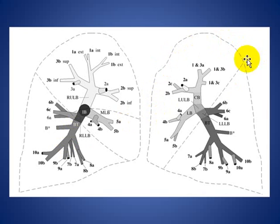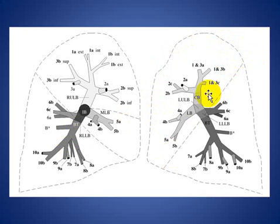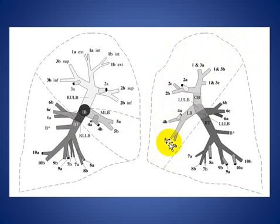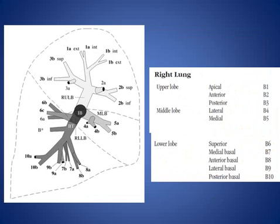In the left upper lobe, there are two segments: the anterior and apical-posterior segments. The lingula has two segments — superior and inferior. And there are four segments on the left lower lobe.